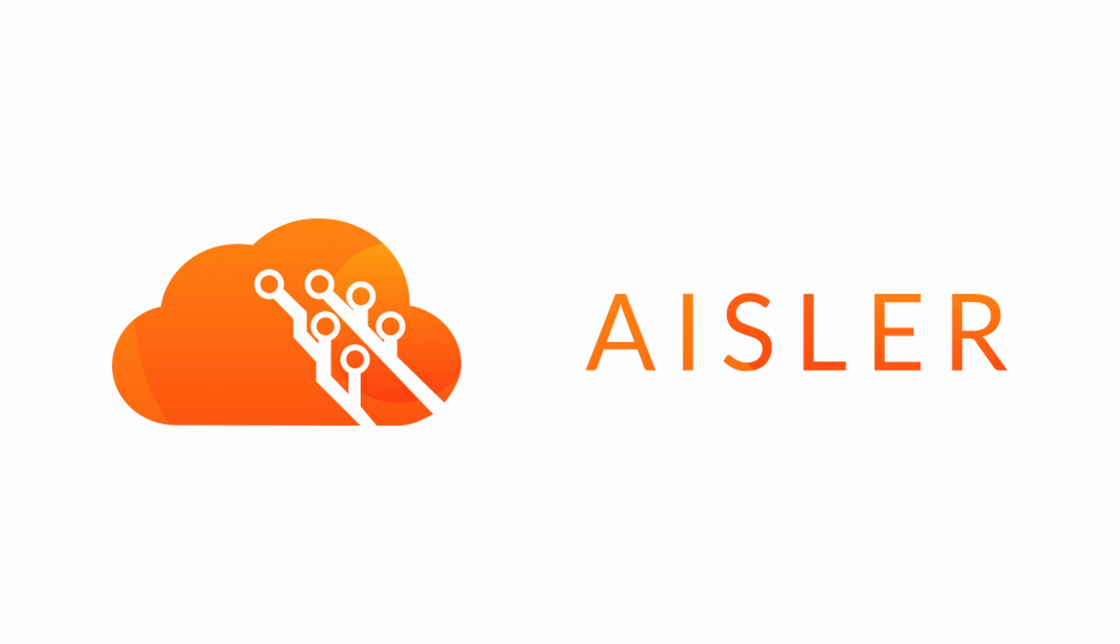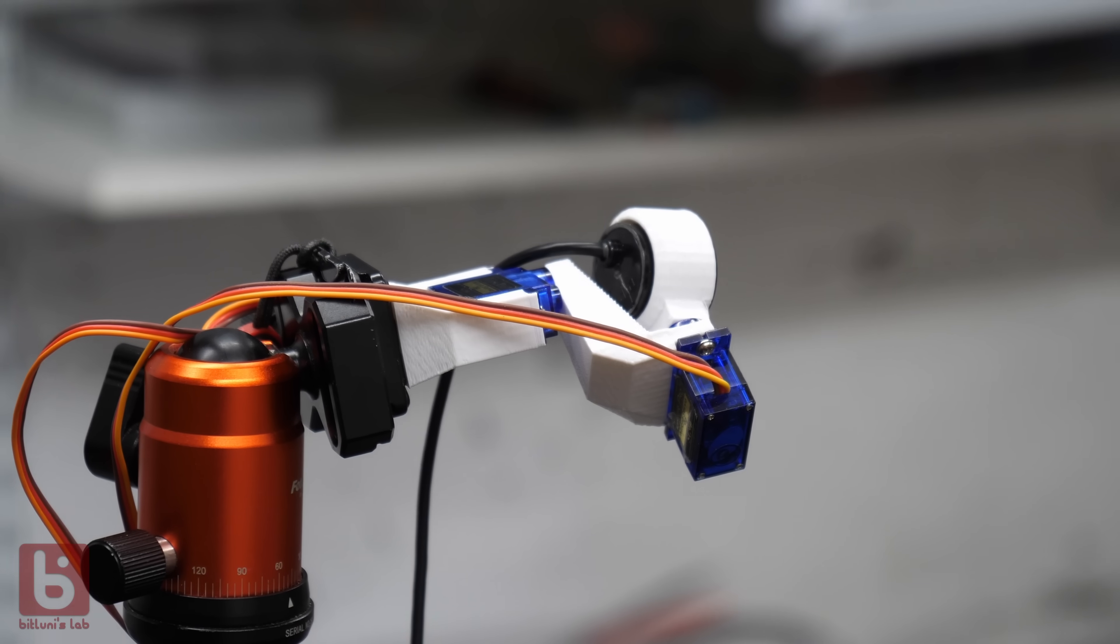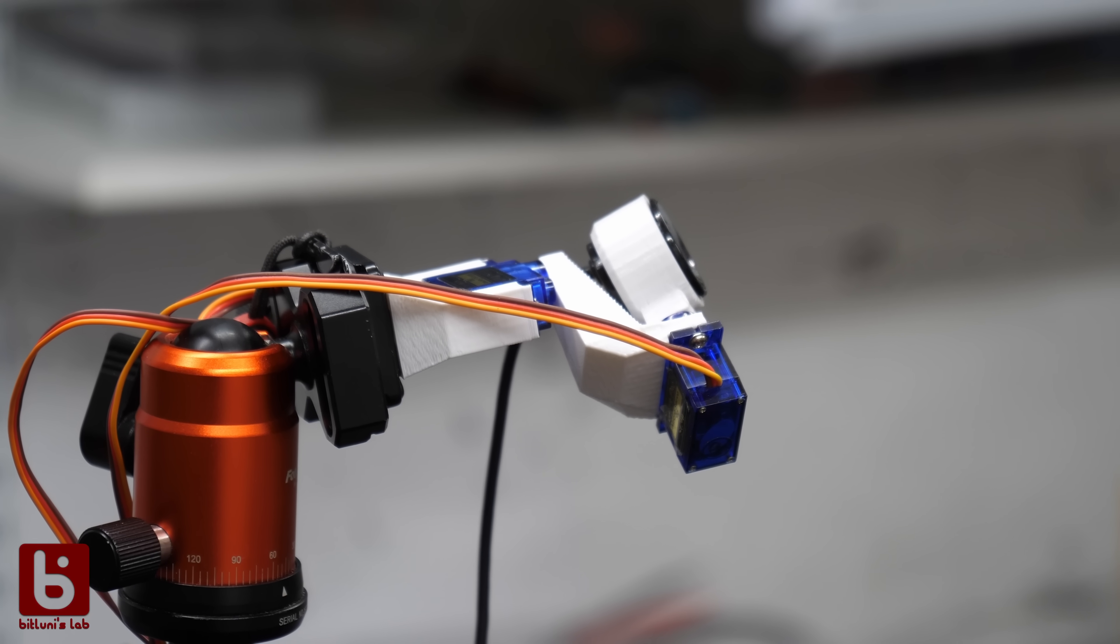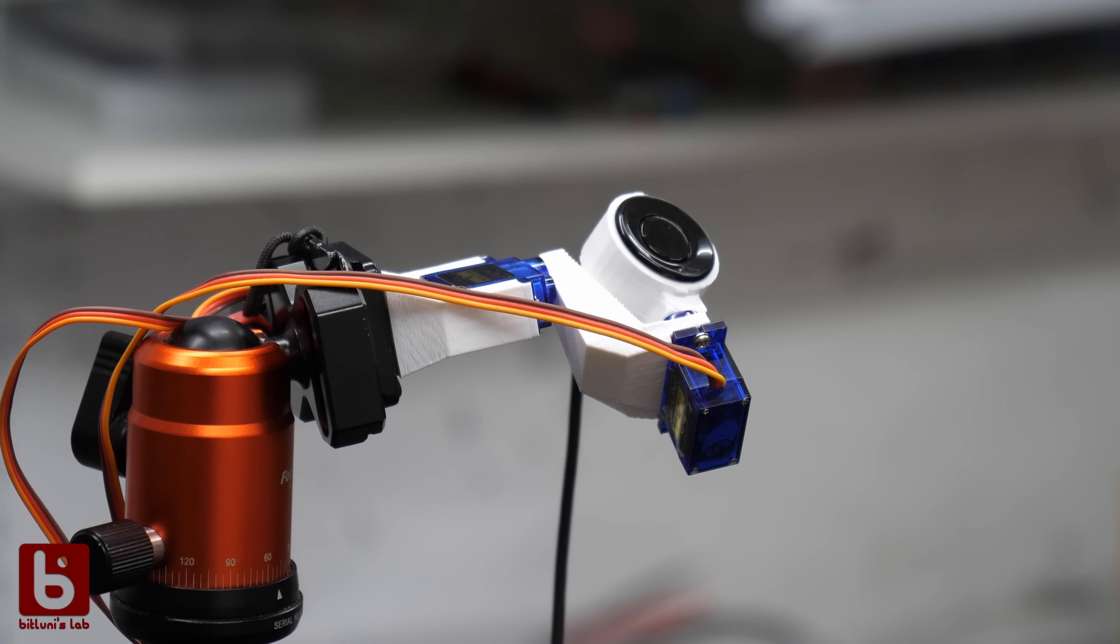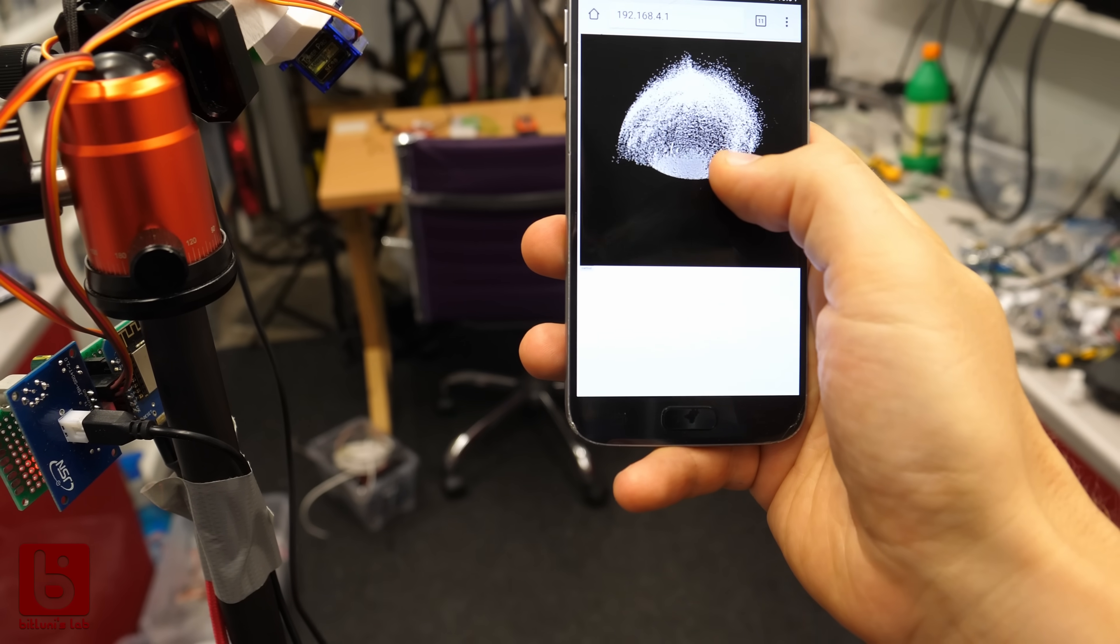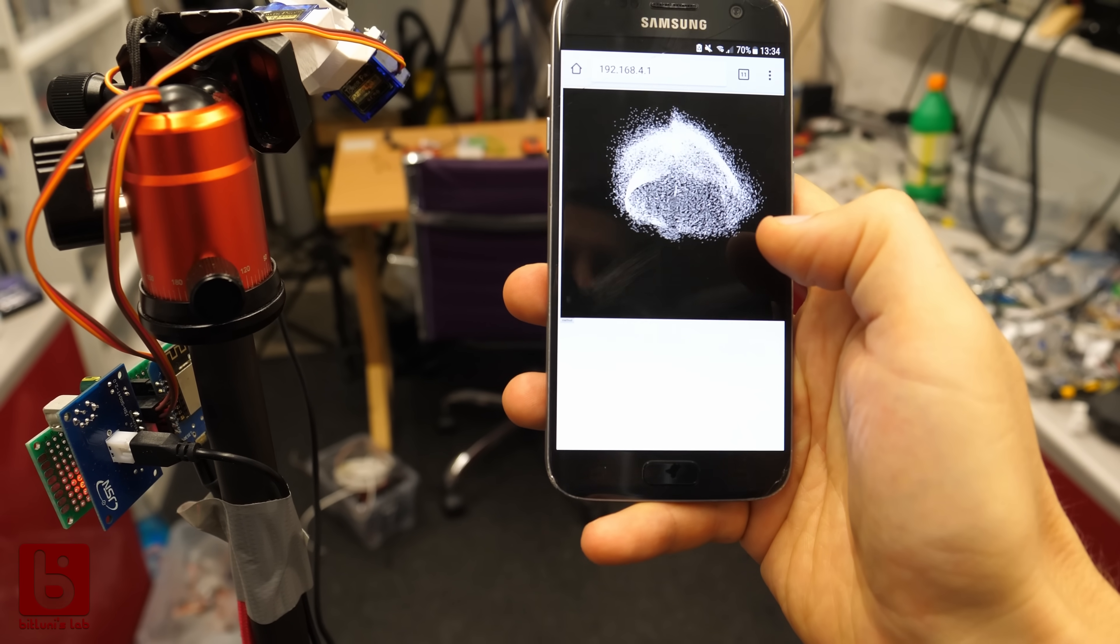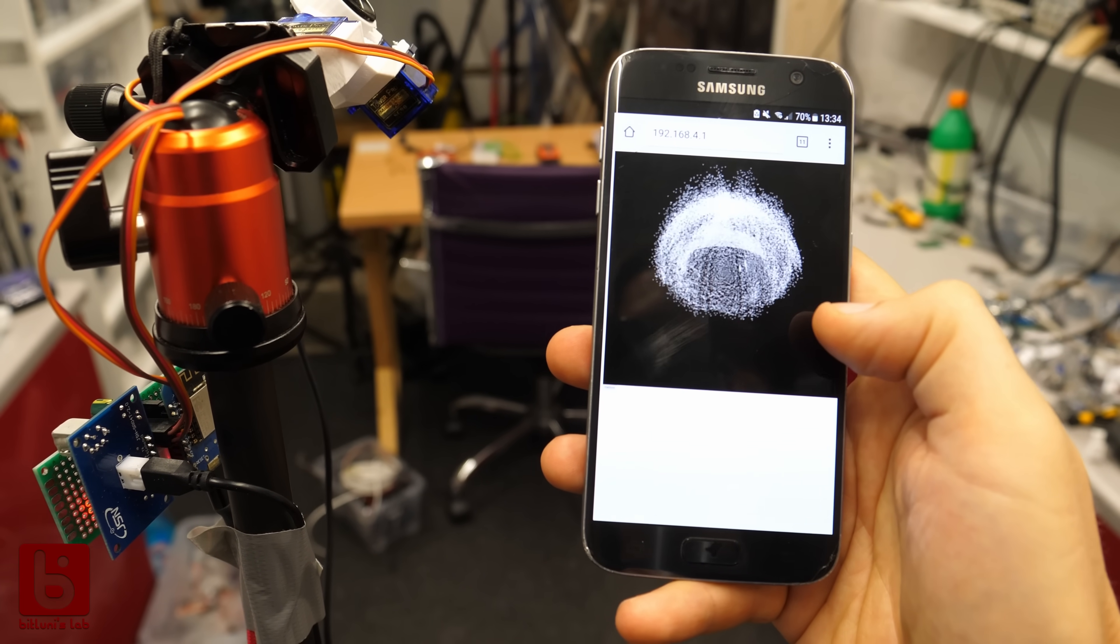This video is sponsored by Eisler. A few years ago I tried to use a car proximity sensor to perform a scan of my lab. It was a super simple project but I quickly found out that it doesn't work because the beam is too wide to get any detail.